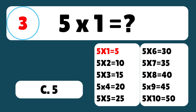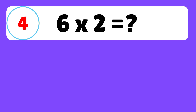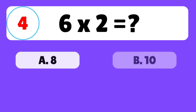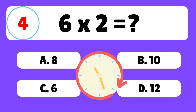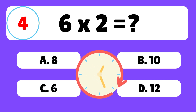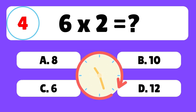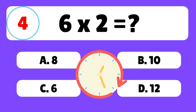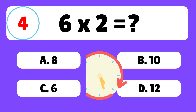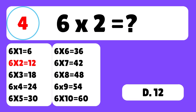Question 4. What is 6 times 2? The answer is D. 6 times 2 is equal to 12.